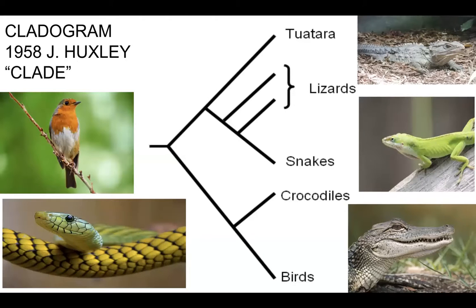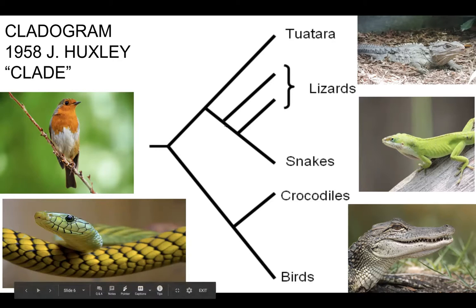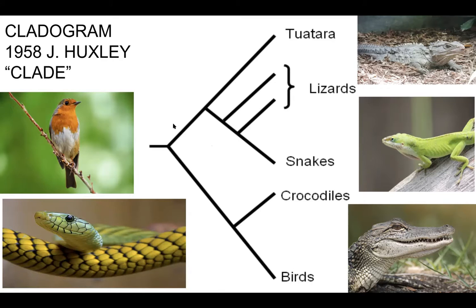Here's the cladogram — it's simple and easy to understand. The word 'clade' was made famous in 1958 by Julian Huxley, the grandson of Thomas Huxley, and it means 'branch.' Look at these branches. Right here comes a group of organisms called diapsids, and all the others — tuataras, lizards, snakes, crocodilians, and birds — are all commonly descended from the diapsids. The tuatara is almost extinct, living only on a few islands off the coast of New Zealand, and is sometimes referred to as a living fossil.